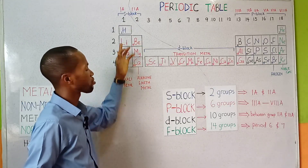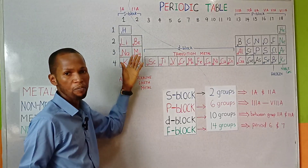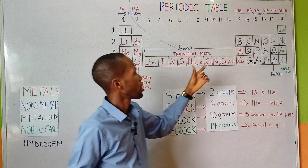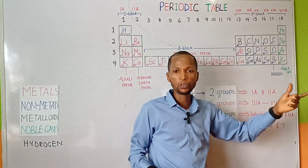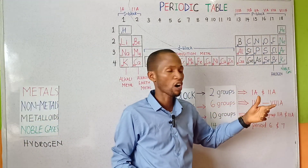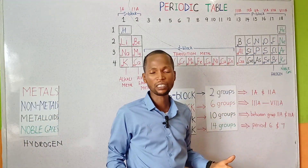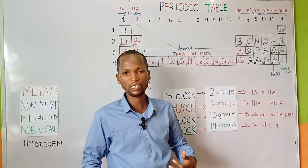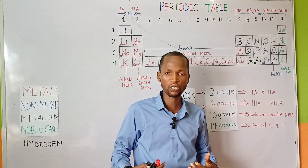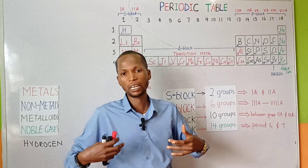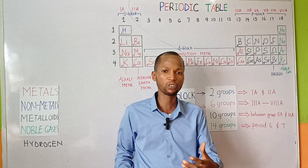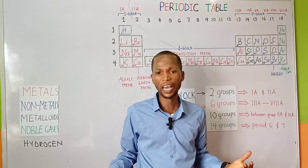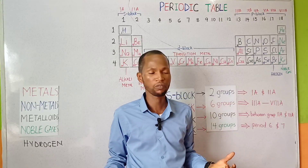Elements in group 1 are metals, but excluding hydrogen, because it can also be found in group 7 of the periodic table as a result of the fact that hydrogen needs one electron to complete its duplet structure. Elements that accept electrons are said to be non-metals, or equally, electronegative elements.